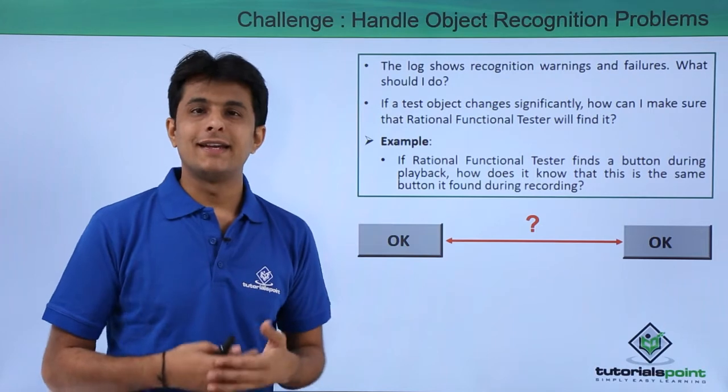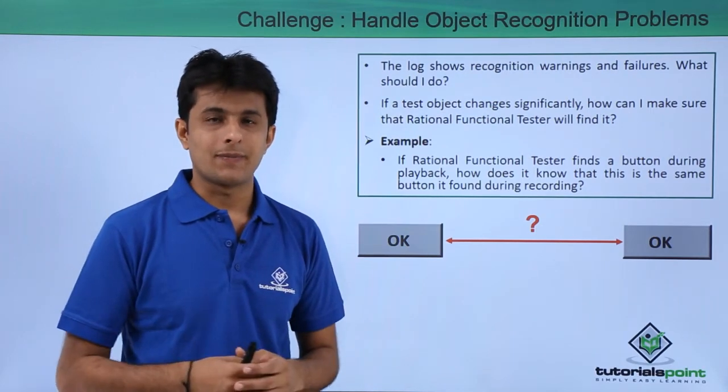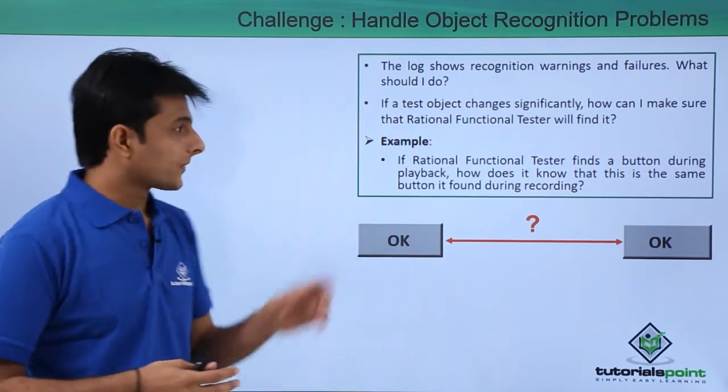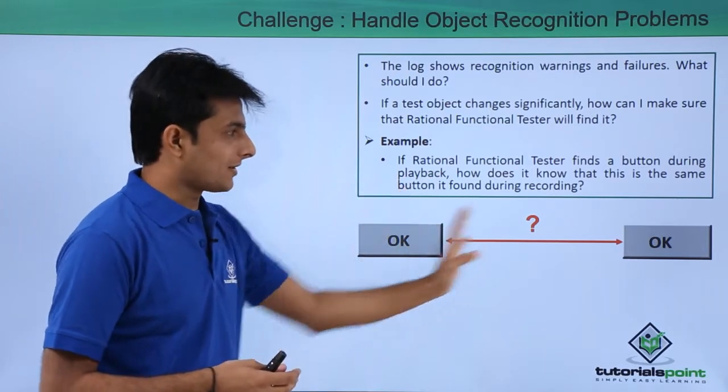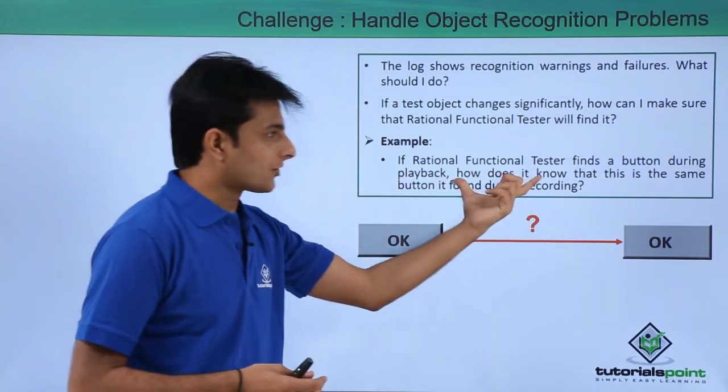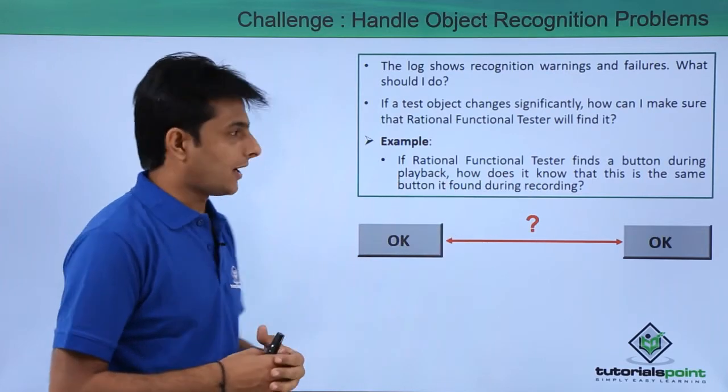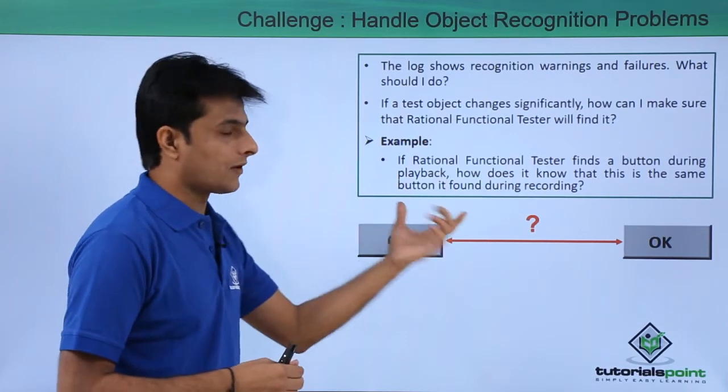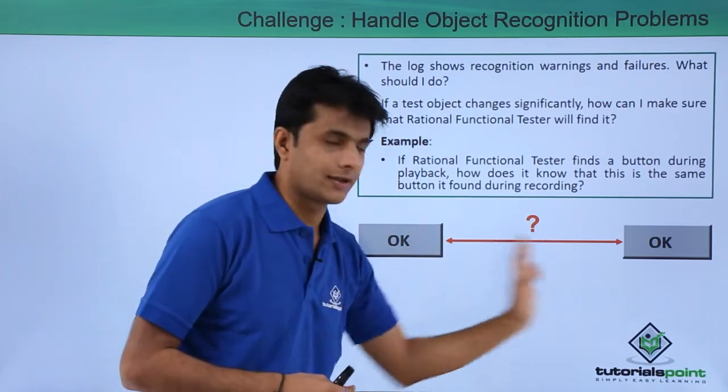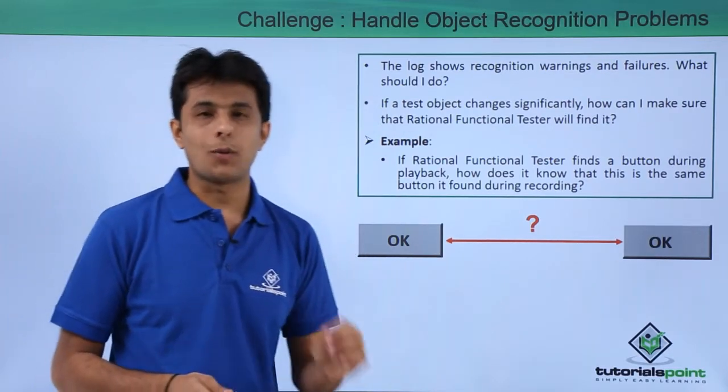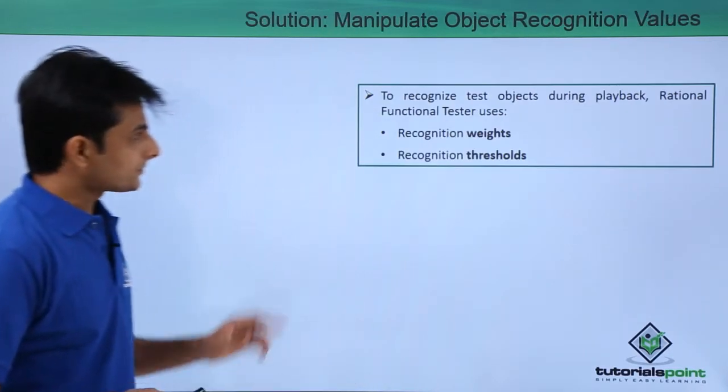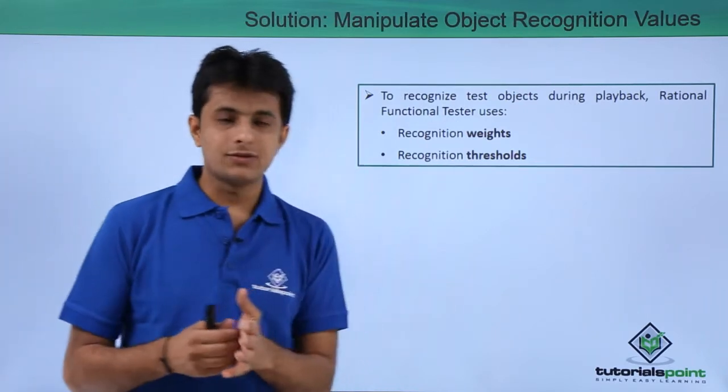But the property values might have changed - the index number, the logical name, or some other property name. So here is an example: if Rational Functional Tester finds a button during playback, how does it know that this is the same button it found during the recording? The answer is using the properties and values.